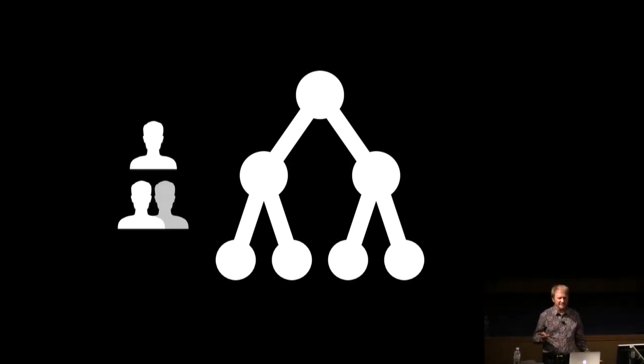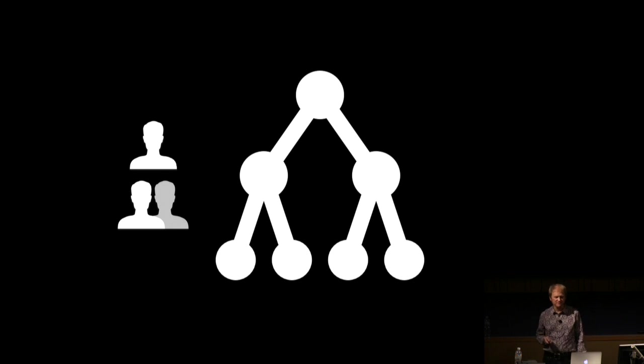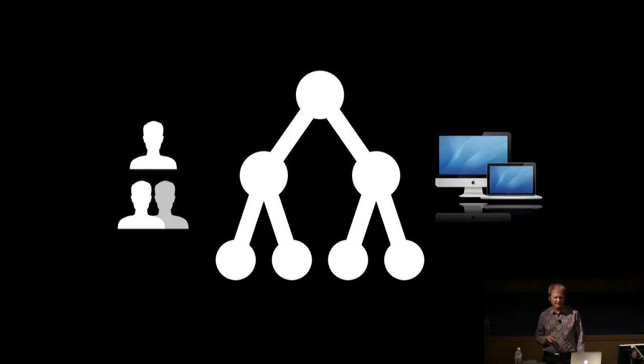So what is a directory service? Wikipedia says a directory service is a shared information infrastructure for locating, managing, administering, and organizing common items and network resources, including volumes, folders, files, printers, users, groups, devices, telephone numbers, and other objects. In simple language, it's a list of users in a hierarchy, including information such as email addresses and phone numbers. It can be used to authenticate or authorize to services and systems, include a list of devices, and apply configurations based on group membership.